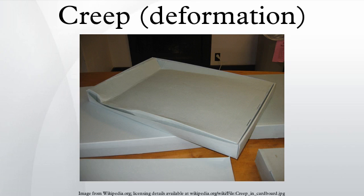Aging glass windows are often erroneously used as an example of creep. Measurable creep would only occur at temperatures above the glass transition temperature around 500 degrees Celsius. While glass does exhibit creep under the right conditions, apparent sagging in old windows may instead be a consequence of obsolete manufacturing processes, such as that used to create crown glass, which resulted in inconsistent thickness.